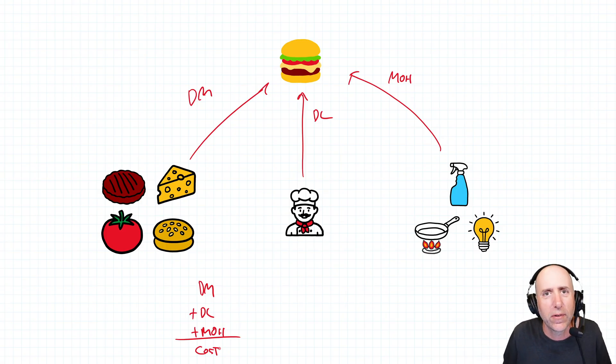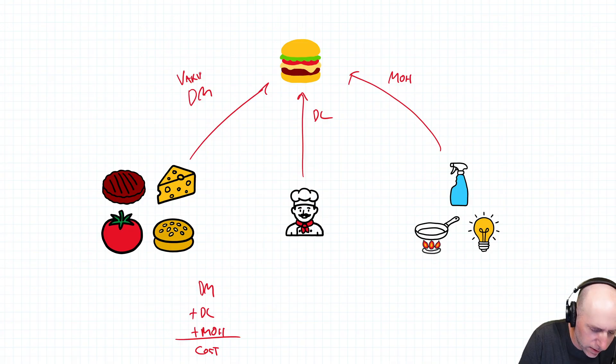And that ultimately becomes our cost of goods sold. So is cost of goods sold variable or fixed? And the answer is actually, it's kind of complicated. It's a mix of variable and fixed costs. Materials, for example,